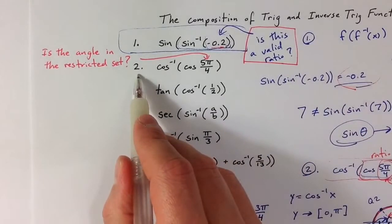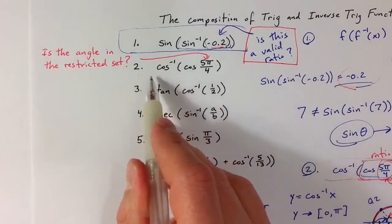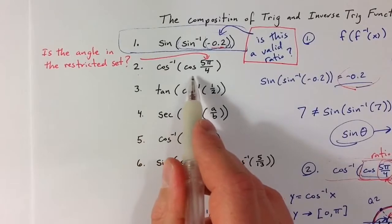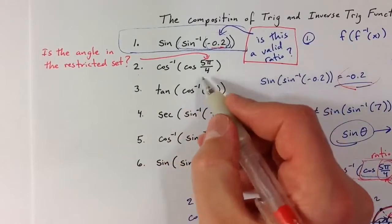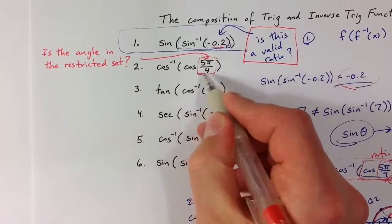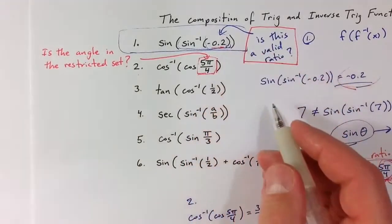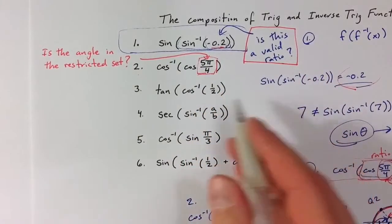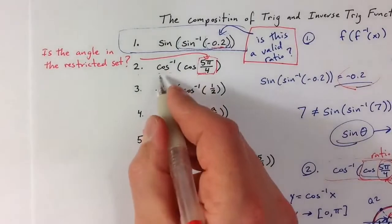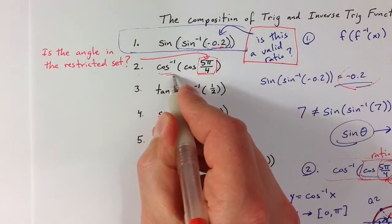For problem 2, we have the inverse trig function on the outside and the matching trig function on the inside. So the question is whether or not this angle is part of the restricted set of angles that can come out of that inverse trig function.